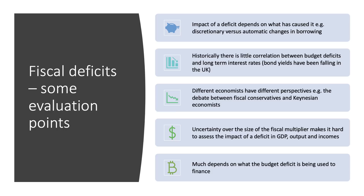A third evaluation point is that different economists have different perspectives. Fiscal conservatives tend to favour less state spending, less borrowing, and lower taxes, whereas Keynesian economists have much more faith in the active use of fiscal policy to manage demand and to prevent countries sliding into semi-permanent recession.